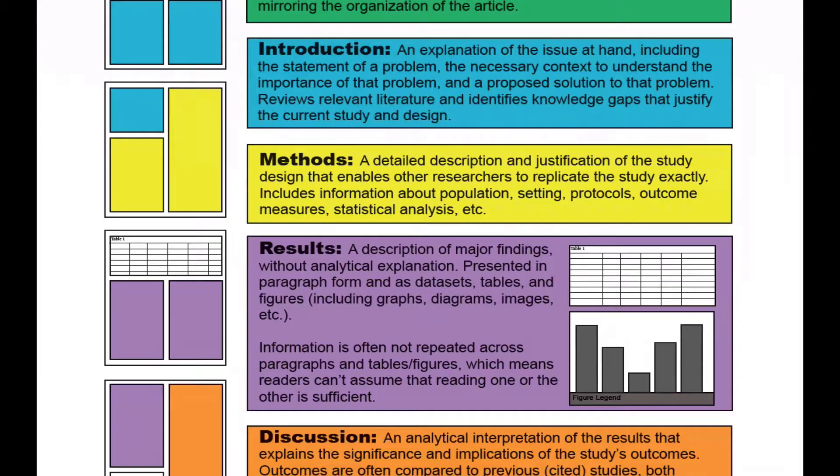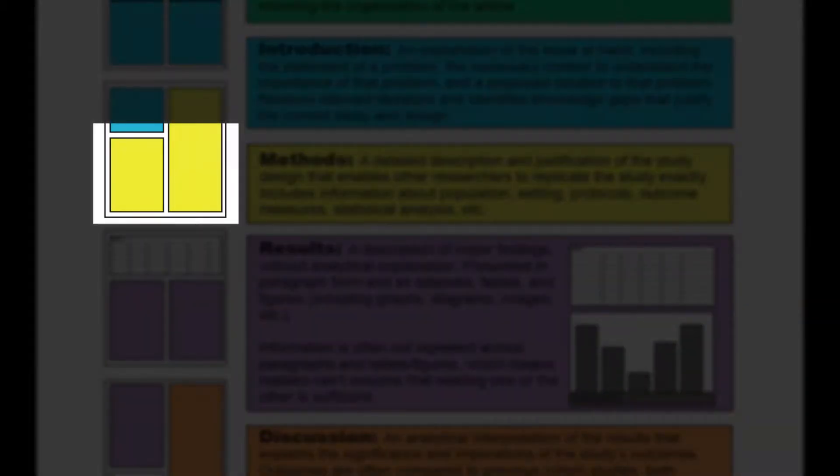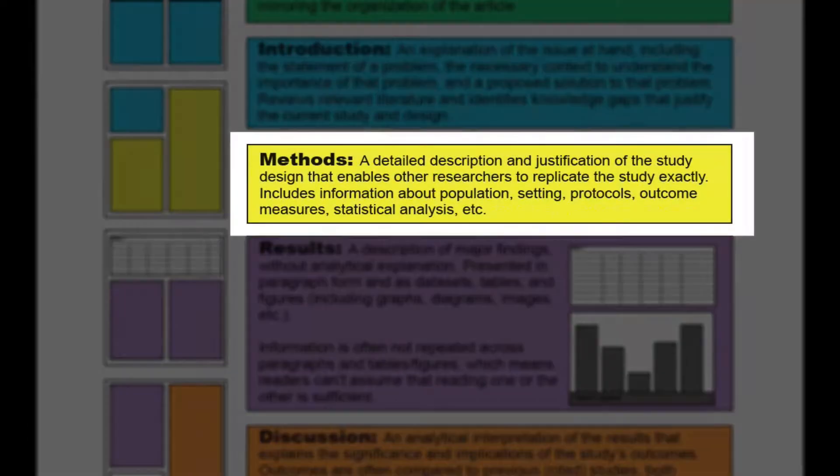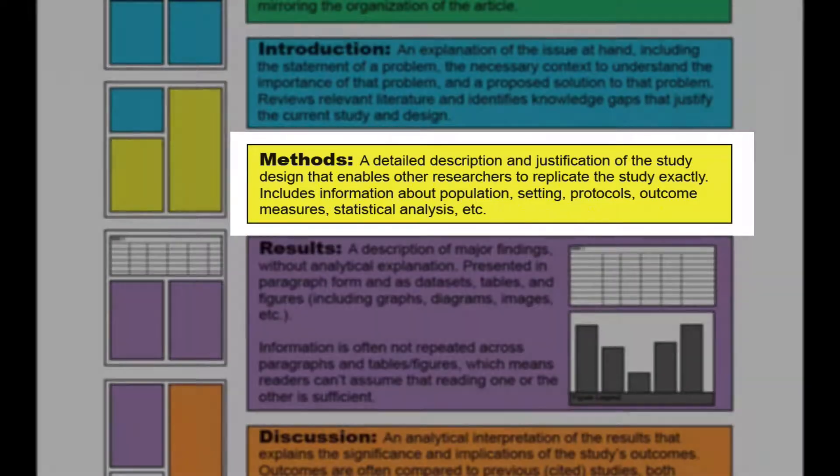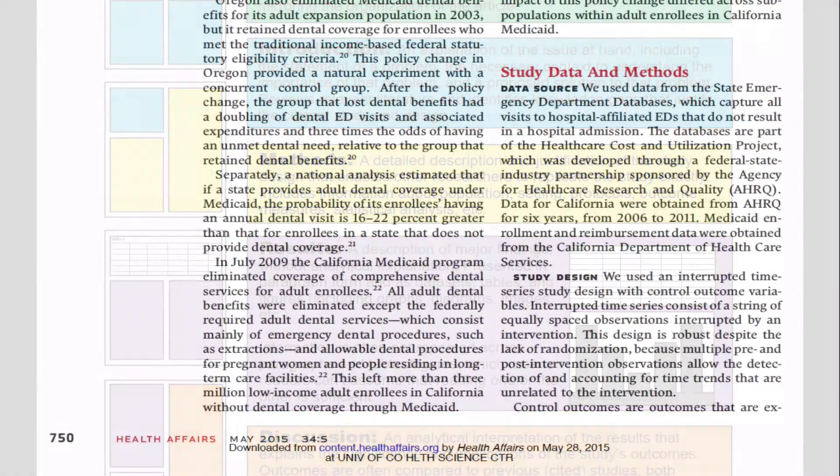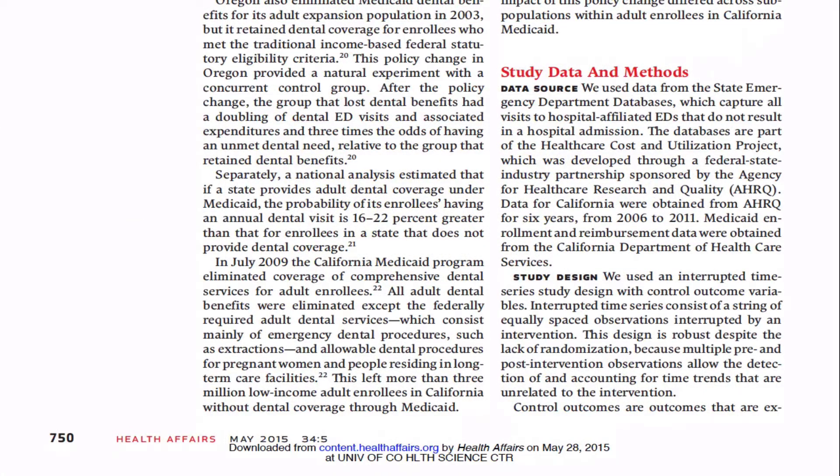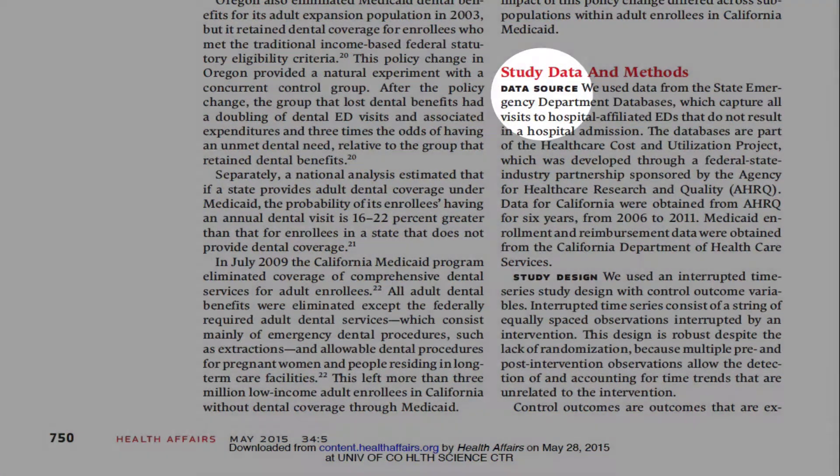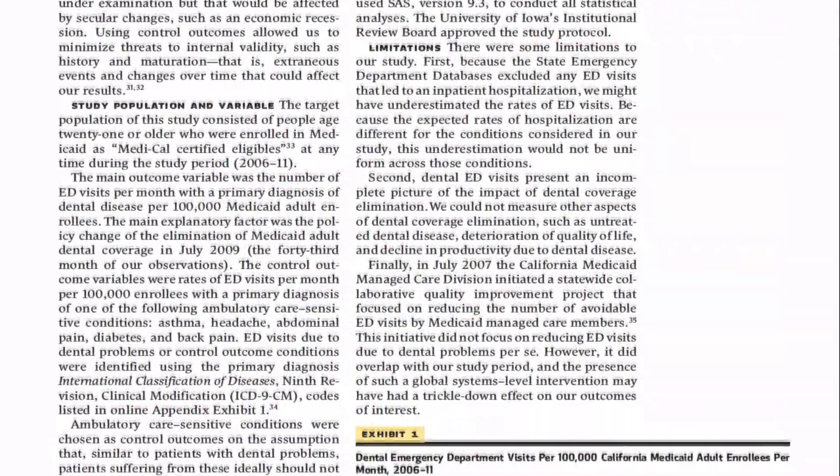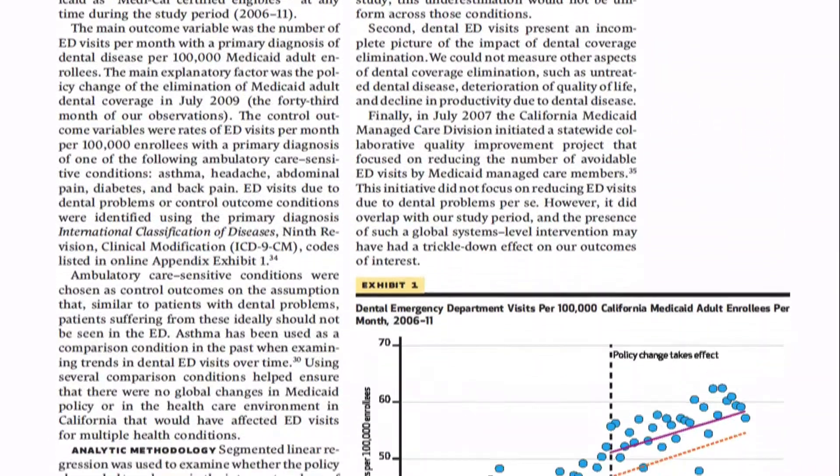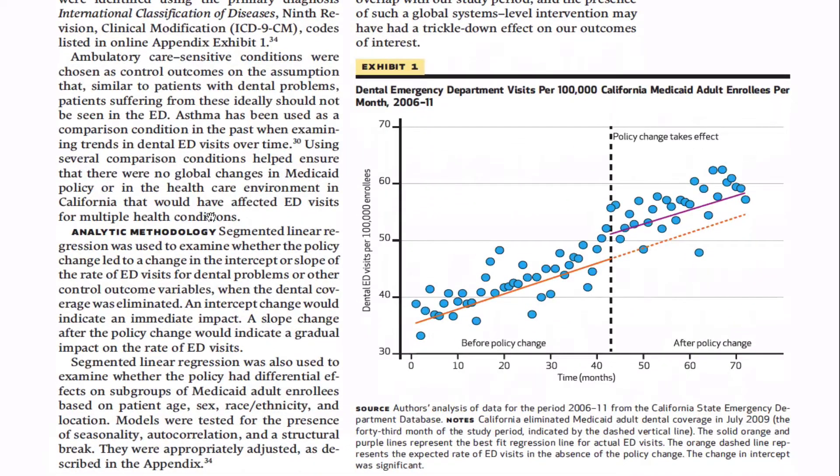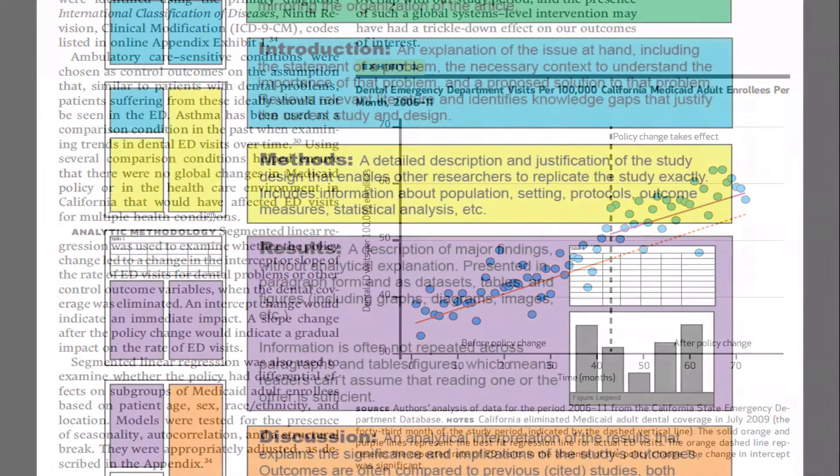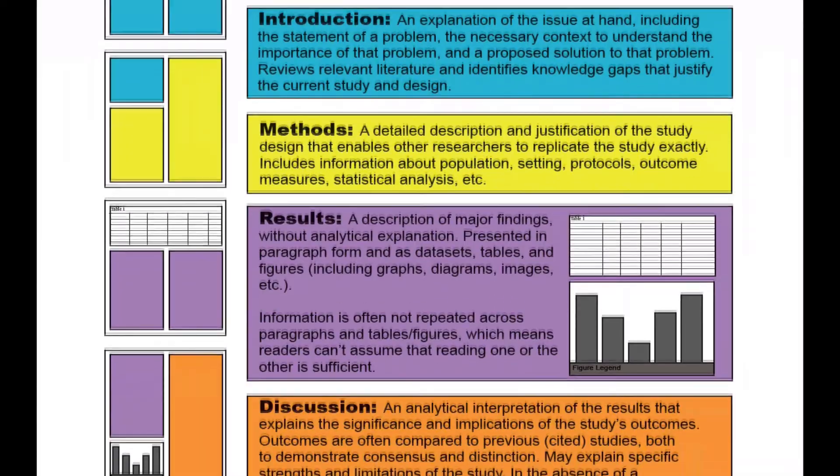In most disciplines, the methods section arrives next and explains the how of the study. Its core responsibility is to be so detailed that another researcher could replicate the study exactly. It may be one long section or divided into subsections discussing the population or subjects, data collection and analysis, and other aspects of the protocol and design. When necessary, the methods section also provides rationale for the study design by citing precedent by previous researchers.